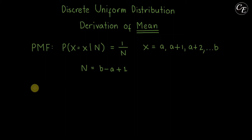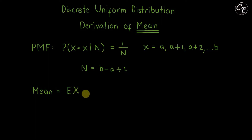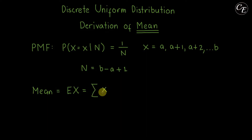So now let us derive the mean. In general, the mean is equal to the expectation of x, where x is the random variable. For a discrete random variable — which is our case, since these are all integers — it is equal to the summation of x times its probability mass function, which is 1 over n. So we have 1 over n here.